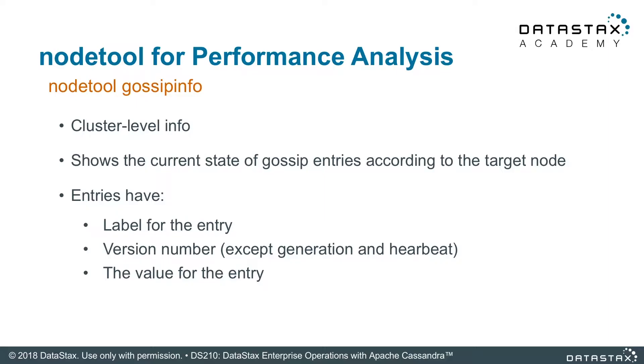The next one is gossip info. Gossip is a concept in Cassandra about node information being transmitted around the cluster. It's meant to transmit information about the cluster state to other nodes in the system, basically keeping each other informed. This command shows you if that's actually happening — there's state information, which generation level is being told to everyone else, if it's falling behind, that sort of thing. This information can be helpful if you're looking for a potentially bad situation, such as a split brain.